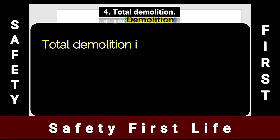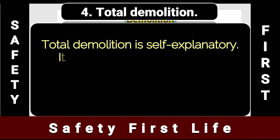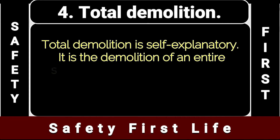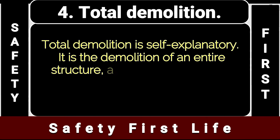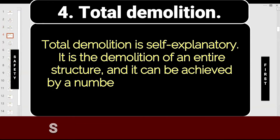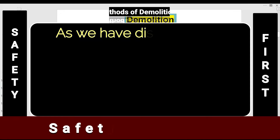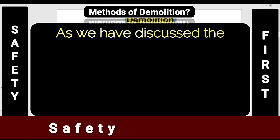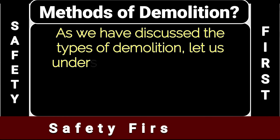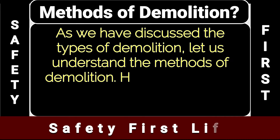The fourth type is total demolition. Total demolition is self-explanatory — it is the demolition of an entire structure, and it can be achieved by a number of methods. Let us now understand the methods of demolition.